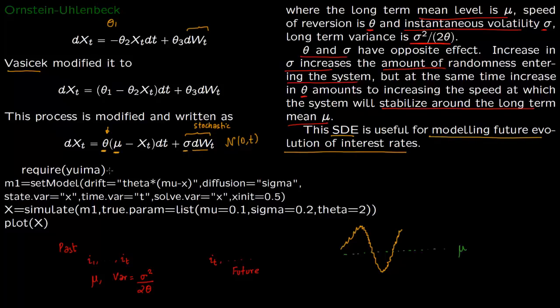So again you need package Vima. You set the model. So again I'm going to outline. So this is the drift of the model. And this part is the diffusion. And that's what we are going to copy. So drift is theta times mu minus x.